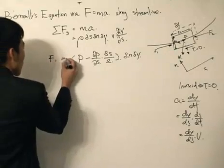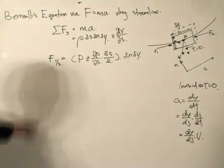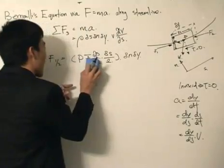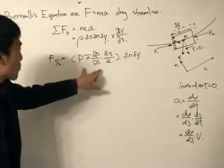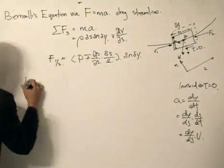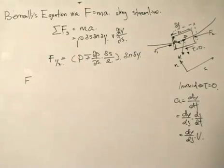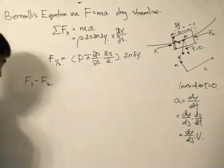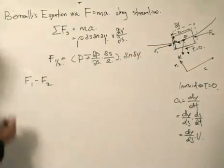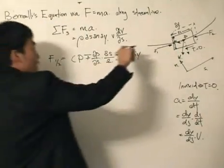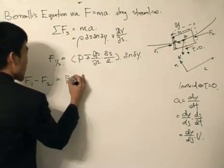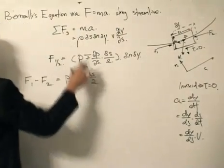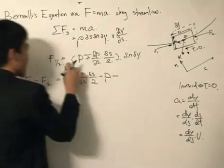For F2, moving forward along the streamline, the pressure is P plus (∂P/∂S)(ΔS/2), multiplied by the area ΔN·ΔY. Taking F1 minus F2 to get the resultant pressure force along the streamline: the P terms cancel, the minus and plus signs on the gradient terms both contribute minus, giving us negative (∂P/∂S)·ΔS·ΔN·ΔY, which equals minus (∂P/∂S) times the volume.